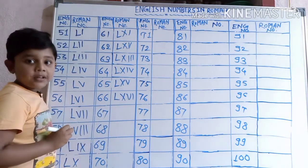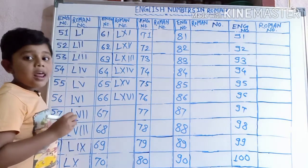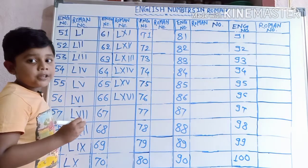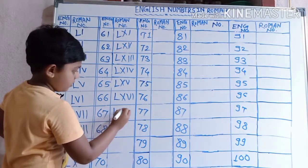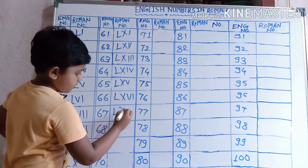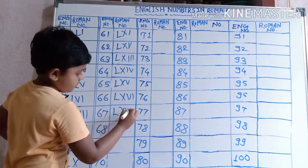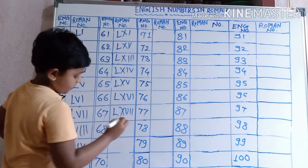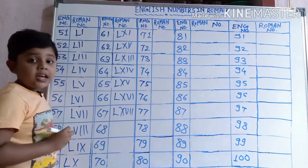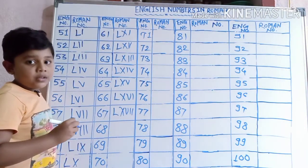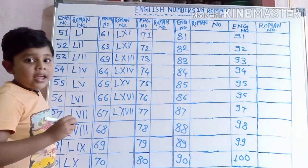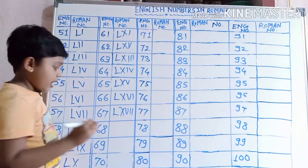67 ko: L, X, V, I, I. 68 ko: L, X, V, I, I, I.